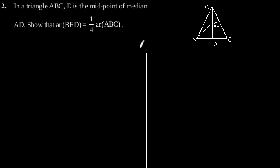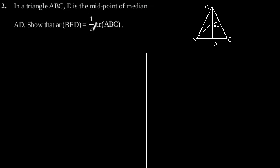Exercise 9.3, Question number 2. In a triangle ABC, E is the midpoint of median AD. We need to show that the area of triangle BED is equal to one-fourth the area of triangle ABC.